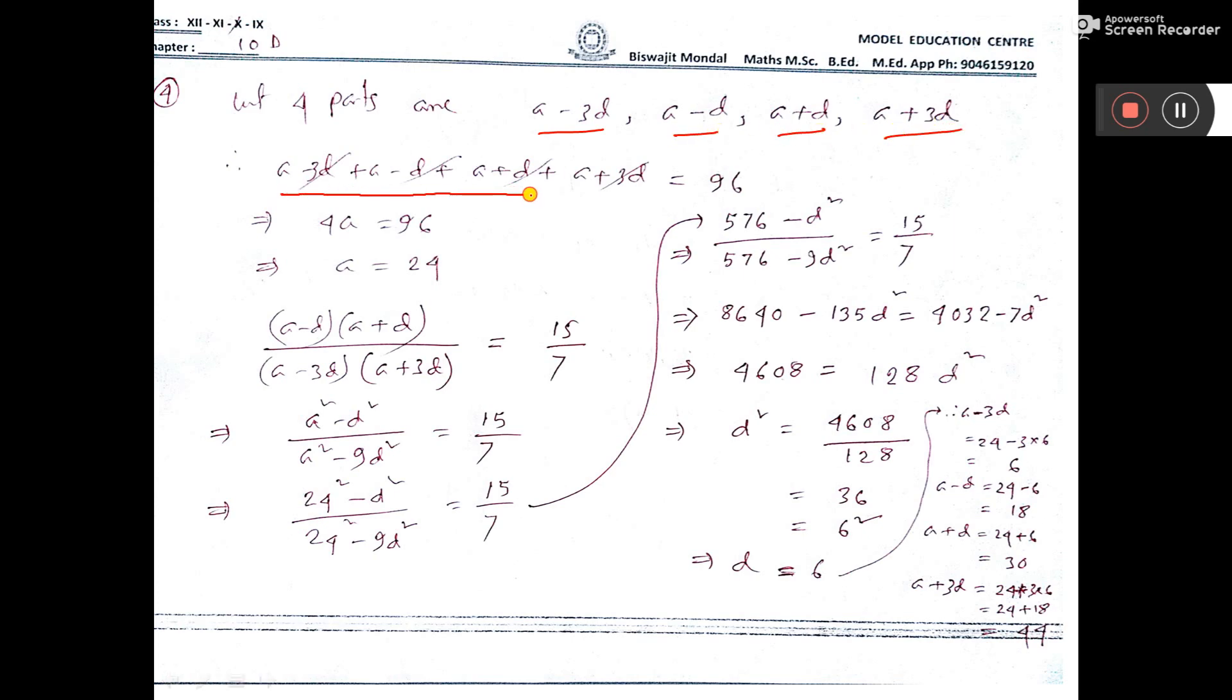Now their sum, it is given 96 in the question. So this d, this d cancel, 3d and this 3d cancel, plus minus. Now a, a, a, a, if you add it is 4a is equal to 96, that is a equal to 96 by 4, that is 24.